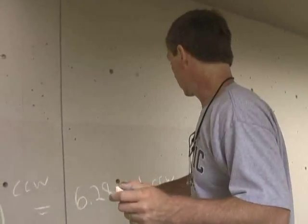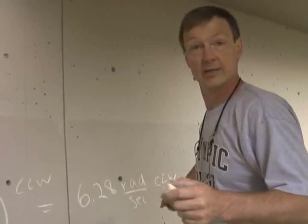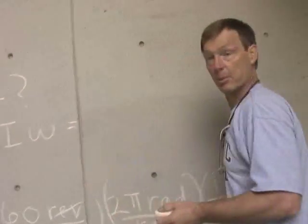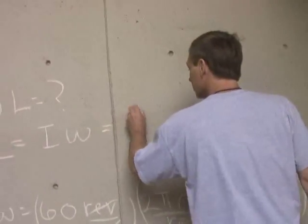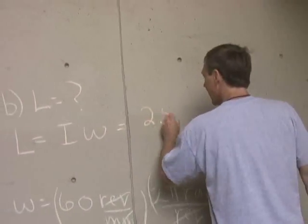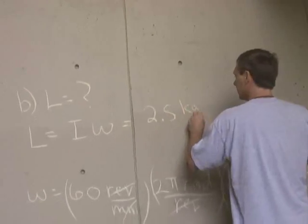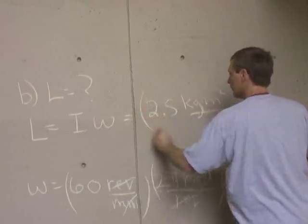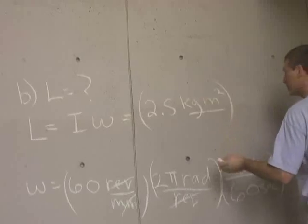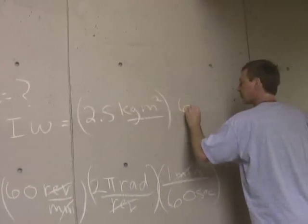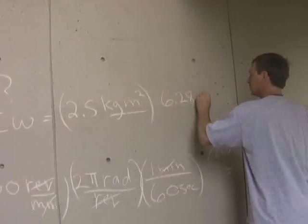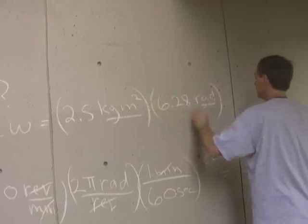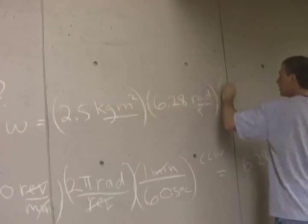Now that I've got the angular velocity in radians per second, we can find out what the angular momentum is. It's 2 and a half kilogram meters squared — that's the moment of inertia — times 6.28 radians per second, counterclockwise.